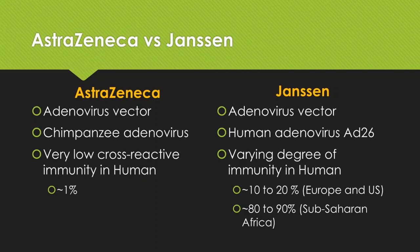Let's look at the differences between AstraZeneca and Janssen vaccines. They both use adenovirus vector — that is the common technology. However, AstraZeneca uses a chimpanzee adenovirus, whereas Janssen uses human adenovirus AD26. Because the AstraZeneca vector is from chimpanzees, there is actually very low cross-reactive immunity in humans — about 1% based on their findings. On the other hand, for the Janssen vaccine, depending on location, in Europe and the US there is about 10 to 20% reported immunity in the population. However, in sub-Saharan Africa there is up to 90% natural immunity against AD26.